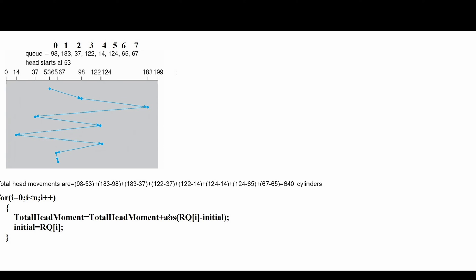So for i=0: total head movement = 0 + ABS(RQ[0] - initial) = ABS(98 - 53) = 45. Then we update the head: initial = RQ[0] = 98. For i=1: RQ[1] is 183, so ABS(183 - 98) = 85. We add that to the running total. After 98, the next request is 183, so from 98 we visit 183.